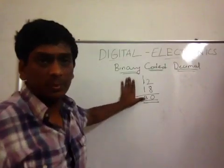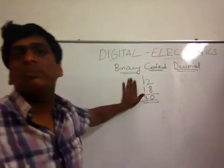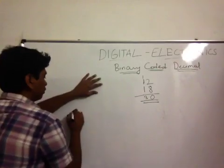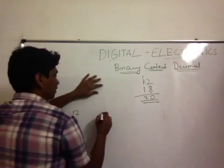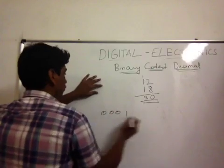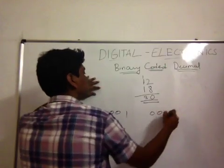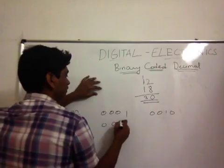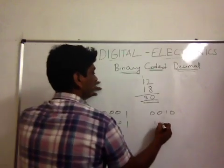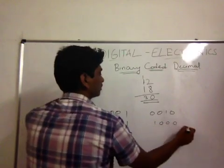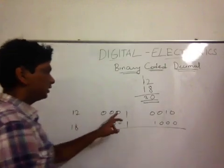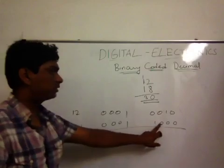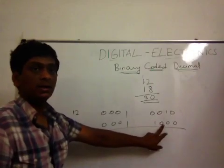Just for verification I wrote 30 aside. Now let us do the BCD calculations. 12 in BCD is 0001 0010 — 0001 is the equivalent of 1 and 0010 is the equivalent of 2. 18 in BCD is 0001 1000 — 0001 is the equivalent of 1 and 1000 is the equivalent of 8.